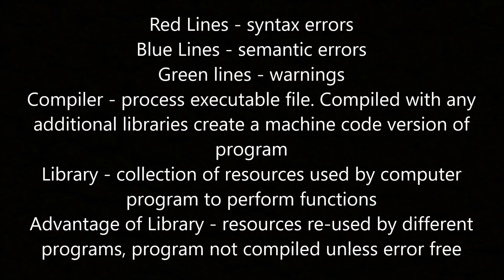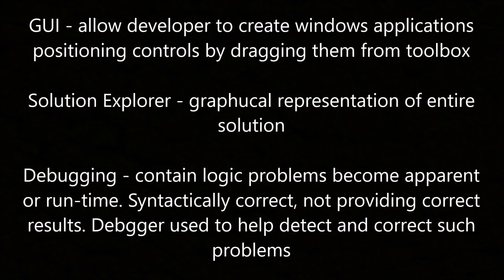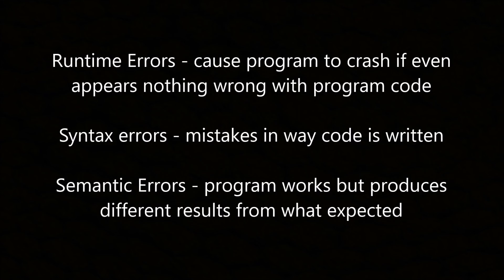Red lines indicate syntax errors, blue lines are semantic errors, and green lines are warnings. The compiler process produces an executable file compiled with any additional libraries, creating a machine code version of the program. A library is a collection of resources used by computer programs to perform functions; the advantage is that resources are reused by different programs, and the program won't compile unless it is error free. The GUI allows the developer to create windows applications by dragging controls from a toolbox. The solution explorer is a graphical representation of the entire solution. Debugging involves logic problems that become apparent at runtime when the program is syntactically correct but not providing the correct result. Runtime errors cause the program to crash, syntax errors are mistakes in the way the code is written, and semantic errors are where the program works but produces different results from what is expected.